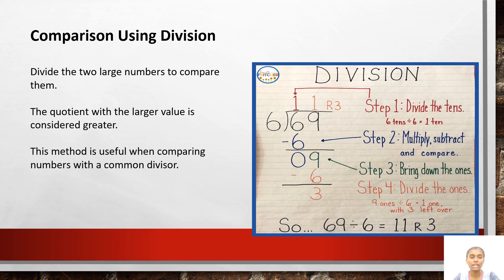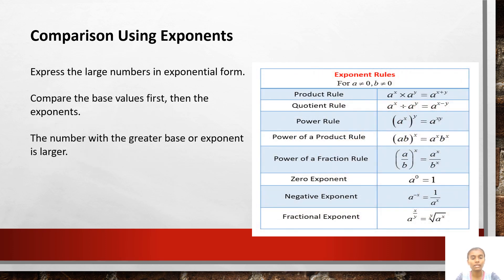Comparison using division: divide the two large numbers to compare them. The quotient with the larger value is considered greater. This method is useful when comparing numbers with a common divisor. Comparison using exponents: express the large numbers in exponential form. Compare the base value first, then the exponents. The number with a greater base or exponent is larger.